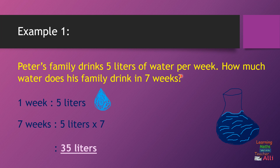Sunday, Monday, Tuesday, Wednesday, Thursday, Friday, Saturday — that is one week. So Peter's family drinks five liters of water from Sunday to Saturday, which is one week. The question is, how much water does his family drink in seven weeks? One week: five liters of water.